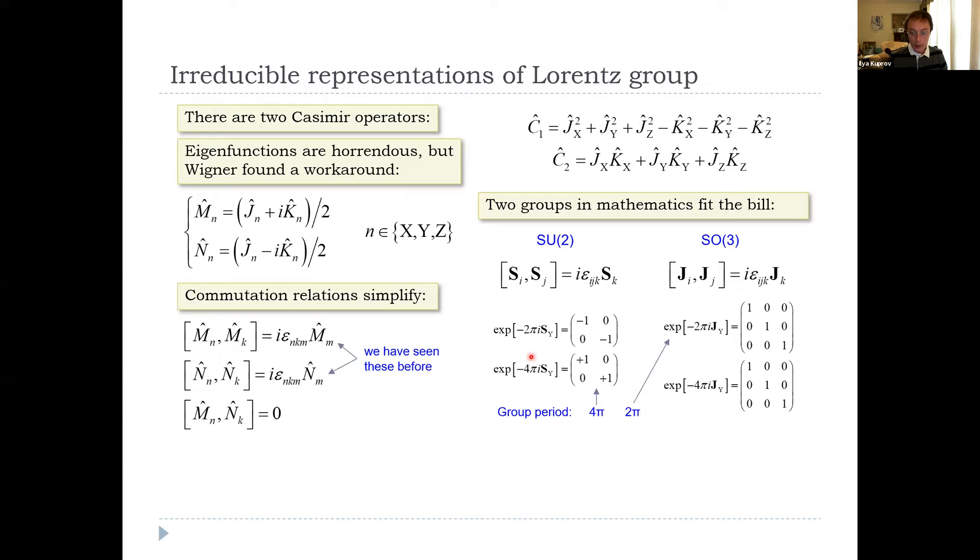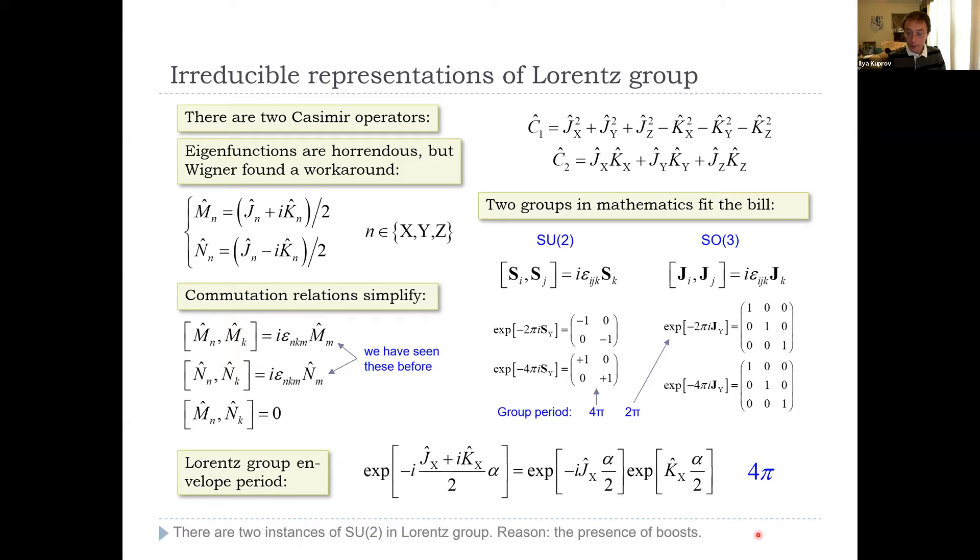This is not the case for SU2. If you do an SU2 transformation by 2π, you get an inversion. Then if you do it by 4π, then you get the identity matrix. So this group is 2π periodic, and that group is 4π periodic, but in an abstract complex space. Well, let's find out what the period is of the Lorentz group. So let's take Mx, for example, and take its exponential. So that's Jx plus ikx over 2. Jx and kx commute, so you can split the exponentials up. Notice this factor of 2 here. exp(iJx alpha) was 2π periodic. exp(iJx alpha/2) has to be 4π periodic. The same applies to kx if you do the math. So this is in fact 4π periodic. This has nothing to do with three-dimensional rotations. The reason is the presence of boosts, which introduce time as a degree of freedom. So there are two instances of SU2 in the Lorentz group, and we know the representations of them, so we can proceed.